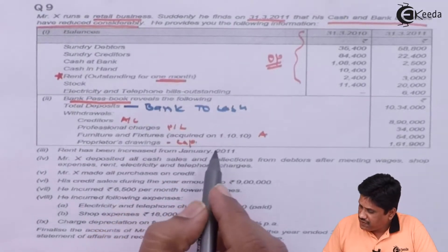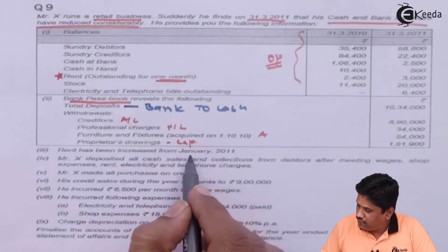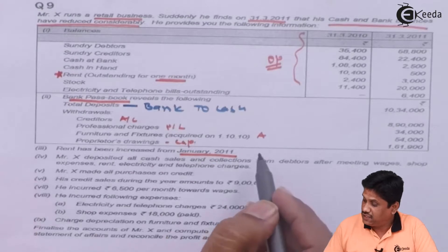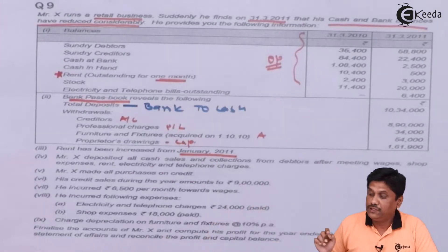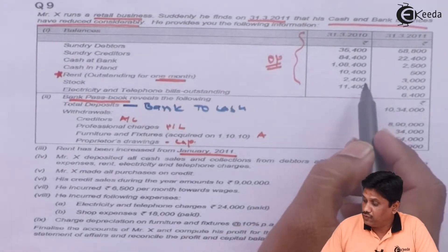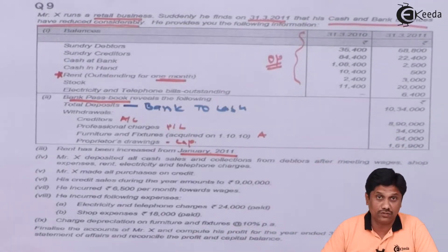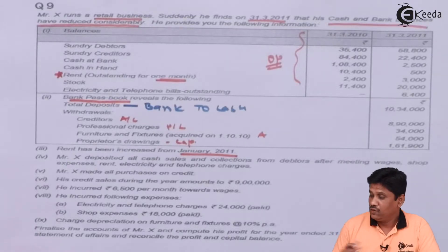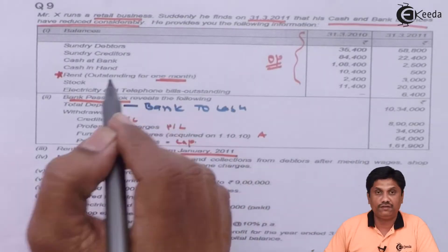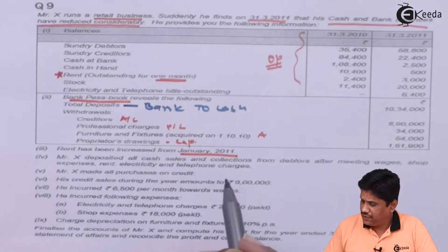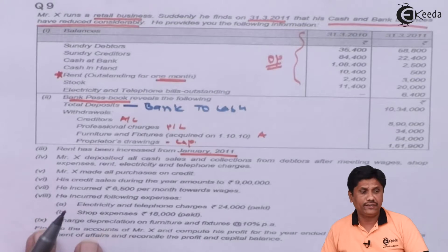Rent has been increased from 1st January 2011. That means prior to that, for 9 months we paid rent at the rate of 2400, and thereafter it became 3000. So we have to prepare a small working note for this rent consideration. I want to do that working note right now, so we will have a working note.